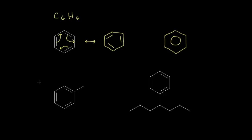Let's look at how to name derivatives of benzene. Here we have benzene with a methyl group coming off of it, so you could call this molecule methylbenzene. But most people don't call it methylbenzene — it's called toluene, which is an acceptable IUPAC name. In this example, the alkyl substituent has only one carbon, the methyl group, versus the six carbons in the benzene ring.